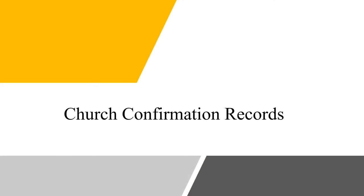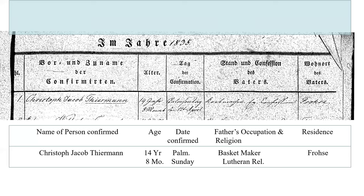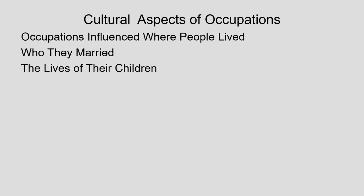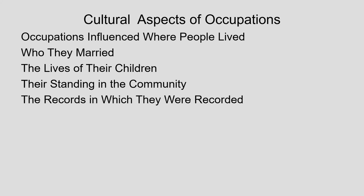Church confirmation records. In Germany, confirmation was a major cultural event in the life of young men and women. After the confirmation, they began to be treated as adults, and many of them left home to find work. This document shows the kind of information that may be found in a confirmation record. Column one gives the name of the one being confirmed. Column two gives their age. Column three gives the regular or feast date of the confirmation. Column four gives the father's name and occupation. Column five gives their residence. After confirmation in middle and upper middle class families, young men often entered into universities or into an apprenticeship. Occupations influence where people lived, who they married, the lives of their children, their standing in the community, and the records in which they were recorded. Sometimes record keepers identified people by their occupation and not their surname.